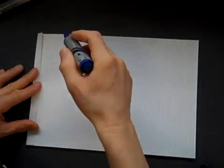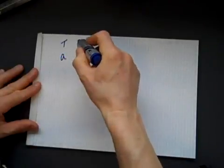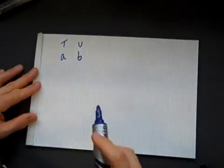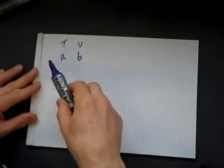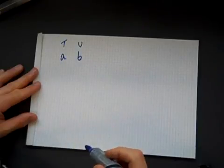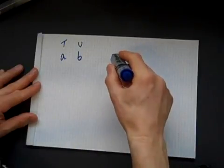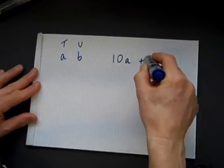Now the column headings would be tens and units. So if I've got A lots of 10 and B lots of units, that represents 10A plus B.